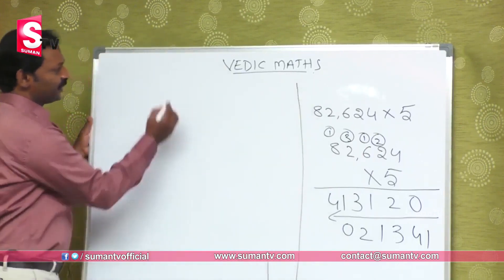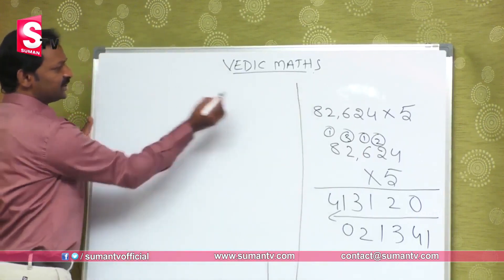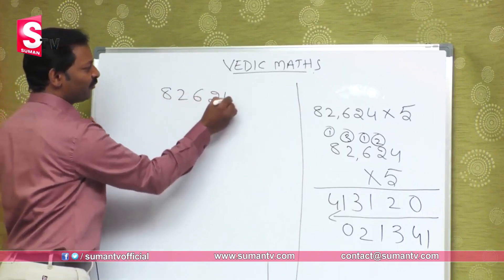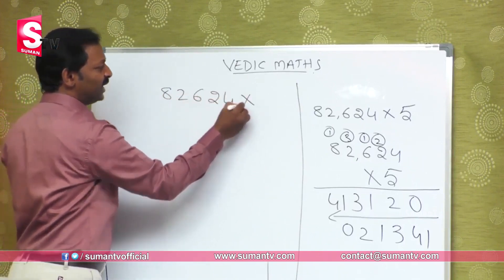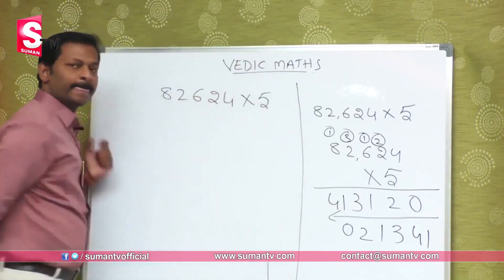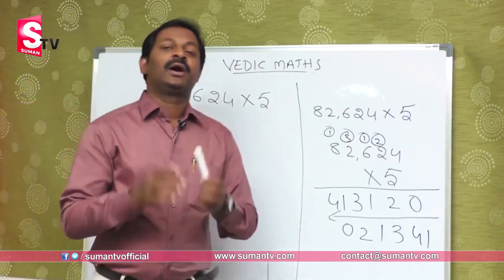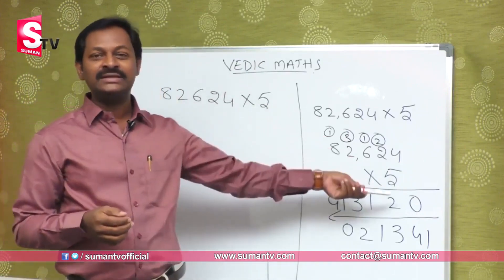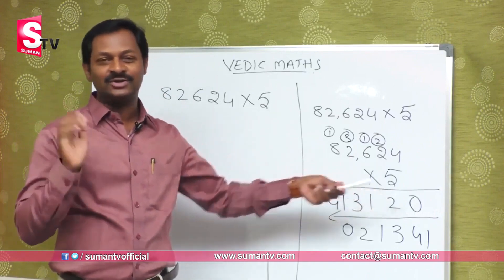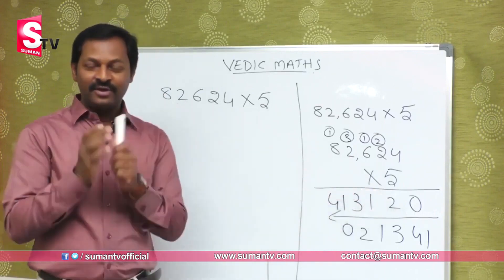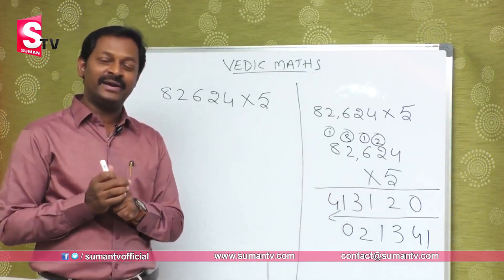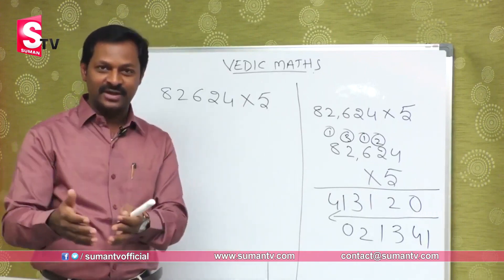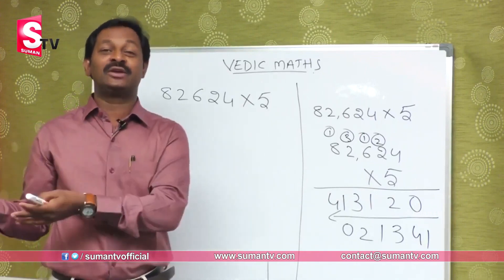We will take the Vedic Maths program. What is the number given? 8, 2, 6, 2, 4 is multiplied by 5. We will take the order of the model — we will take the order of the table. That's what we have to do. We will take the order of 5 and just convert it into a number. It will be in addition, subtraction, multiplication, and division.